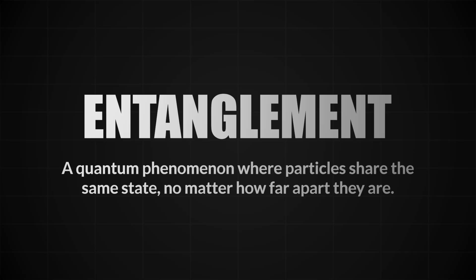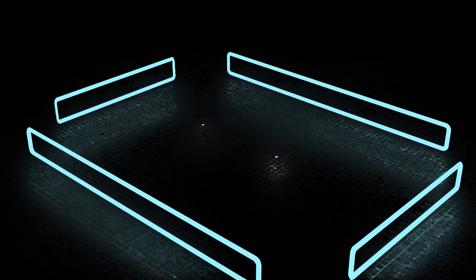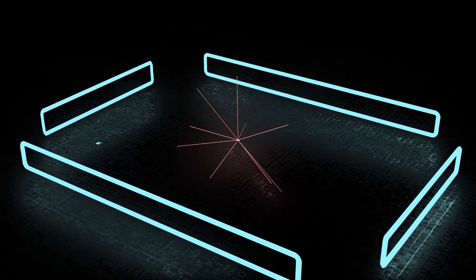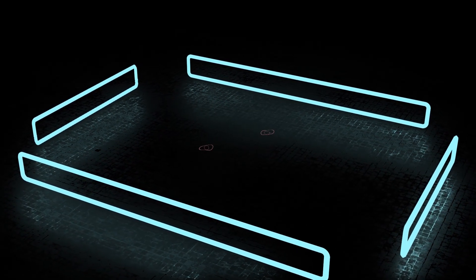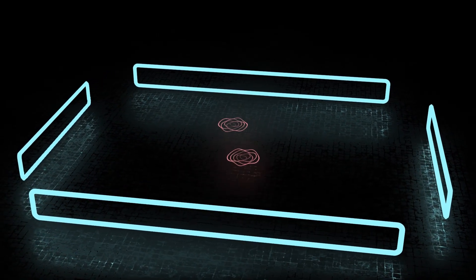The next key concept is entanglement. Imagine two electrons fired toward each other with equal and opposite velocities. We know they'll scatter, but we don't know exactly how. Their paths are described by spread-out wave functions, giving us only probabilities.